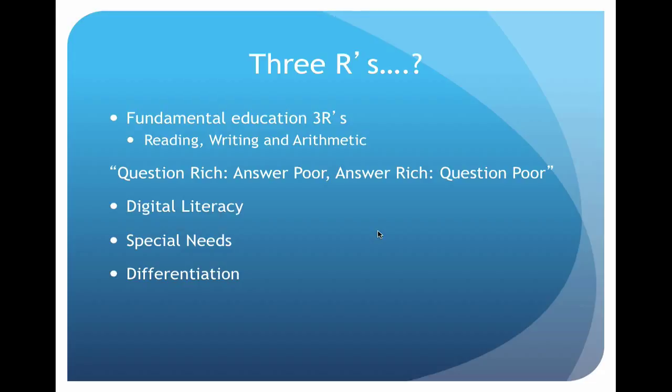Let's start off with the three R's. Now these have changed over time. Originally they used to talk about reading, writing, and arithmetic — and one thing I find amusing is that reading is the only one that actually starts with an R. What we're starting to look at now is that digital literacy seems to be a fourth R, because students may be able to read, write, and do maths, but if they don't know how to use a computer they can have trouble in modern day society.